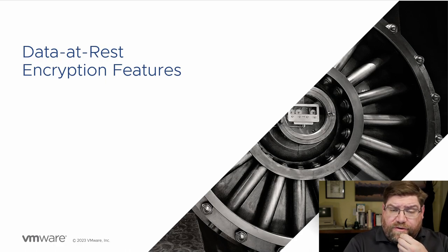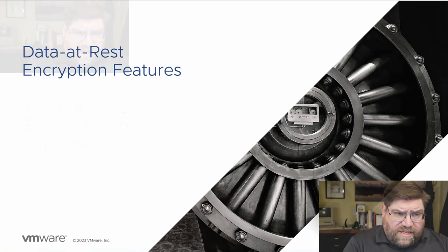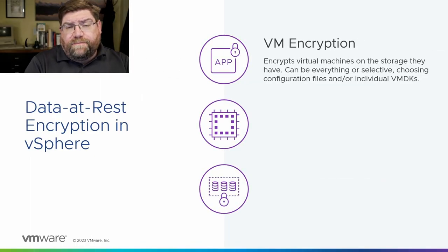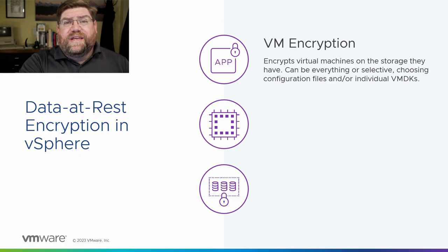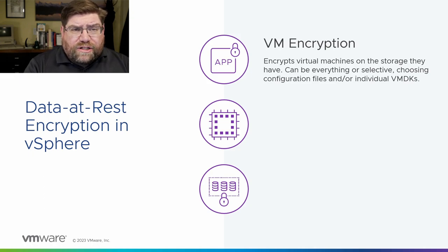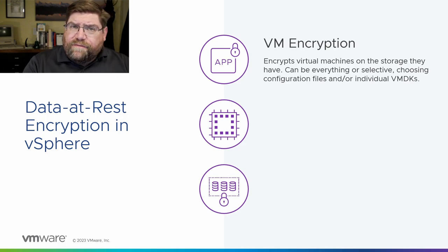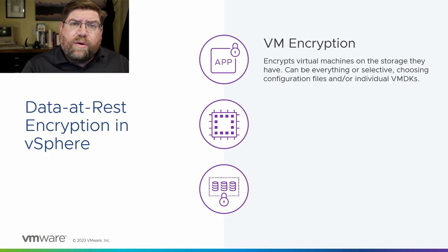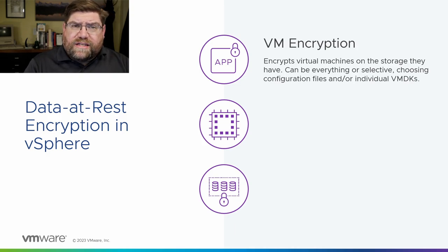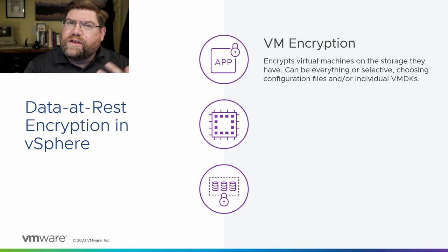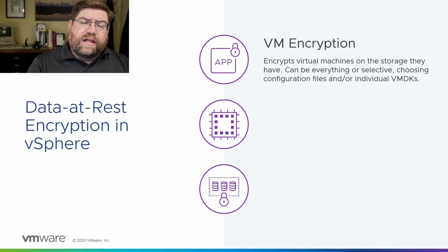Data at rest encryption features in vSphere. The original encryption feature, VM encryption, does exactly that — it encrypts VMs right on the storage that they're sitting on. The VM has to be off while it's happening. It can encrypt everything in a VM or be selective — just the configuration files, or just an individual VMDK — however you want to do it. VM encryption is licensed at the Enterprise Plus level. But other things that use it, like vTPM and native key provider, are actually licensed at all levels of vSphere, so you can turn on Windows 11, for example.